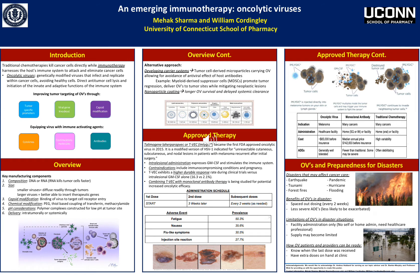Alternative approaches to manufacturing OVs include developing a carrier system through tumor cell-derived microparticles carrying OV, allowing for avoidance of the antiviral effect of host antibodies. An example is myeloid-derived suppressor cells, or MDSCs, which promote tumor regression and delivery of OVs to tumor sites while mitigating neoplastic lesions. MDSCs are a heterogeneous population of cells that expand during cancer, inflammation, and infection, and have a remarkable ability to suppress T cell responses. You can also use nanoparticle coating, which allows for longer OV survival and delayed systemic clearance.